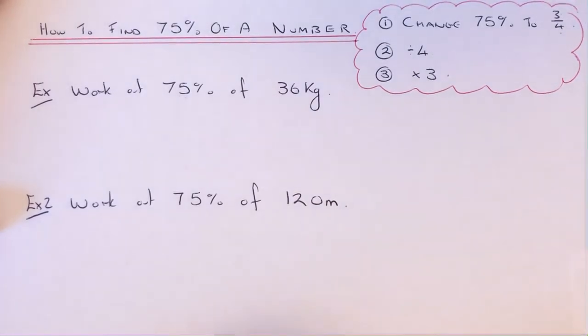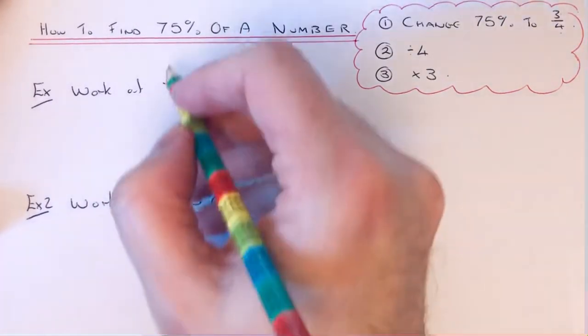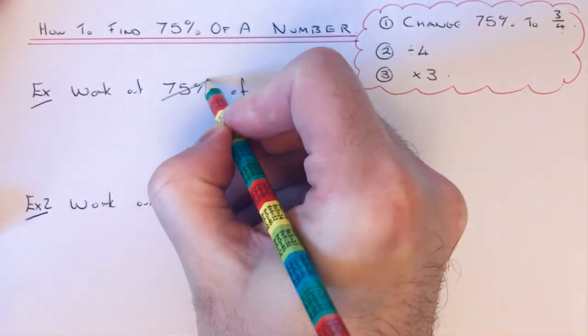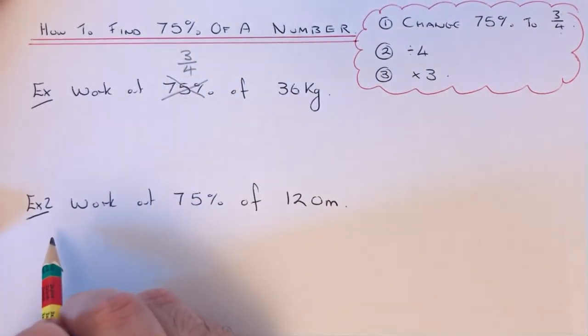Let's see how this works on the two examples. We're going to work out 75% of 36 kilograms. We can change that 75% to three quarters. Then you can use the rule: divide by the bottom and times by the top.